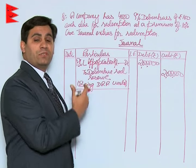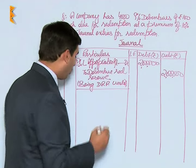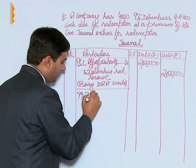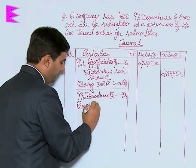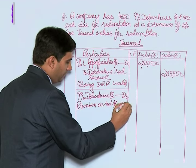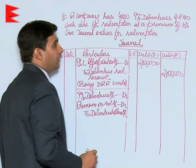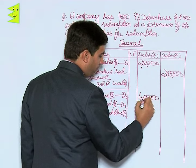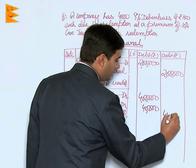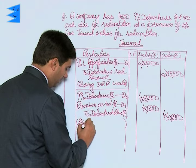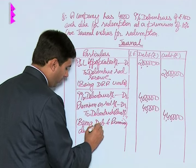The next entry is for extinguishing the liability of debentures and transferring the amount to debenture holders. The entry would be: 9% Debentures Account debited, Premium on Redemption Account debited, to Debenture Holders Account. The face value of debentures to be redeemed is four lakh; premium on redemption is 10% of four lakh, which is forty thousand. So the total amount payable to debenture holders is four lakh forty thousand. Narration: being debentures and premium due for redemption.